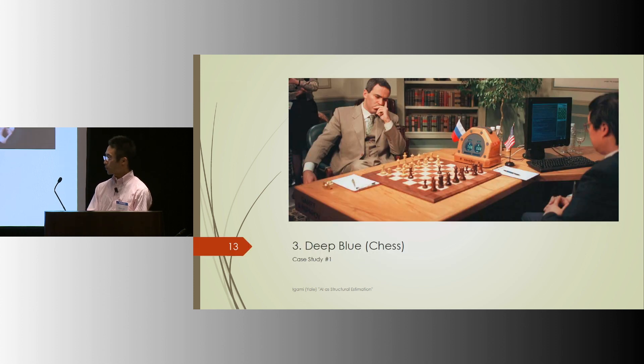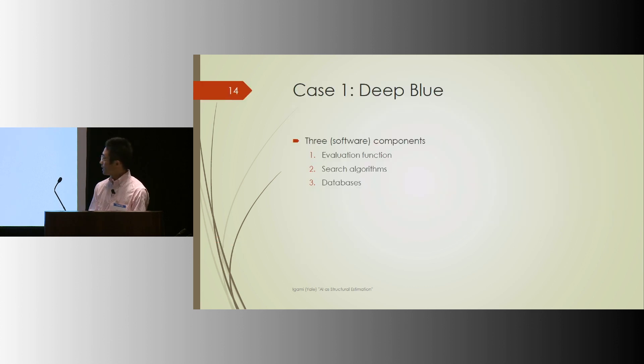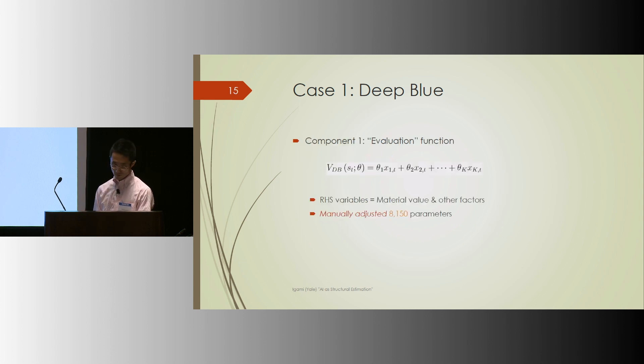So case study number one, Deep Blue. Deep Blue has three software components. The first element is evaluation function to quantify how good or bad the current state is. It's a parametric value function with 8,000 parameters and 8,000 variables to characterize the state of the game, like material value, one point for a pawn, three or so points for a knight, and say one billion points for a king. The IBM team manually adjusted these 8,150 parameters. Okay? That's crazy.